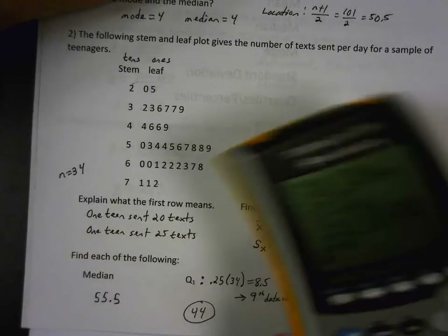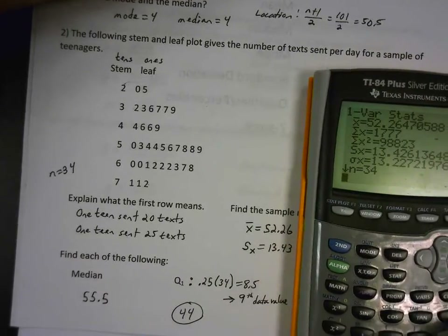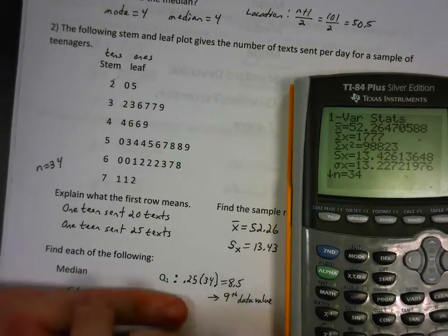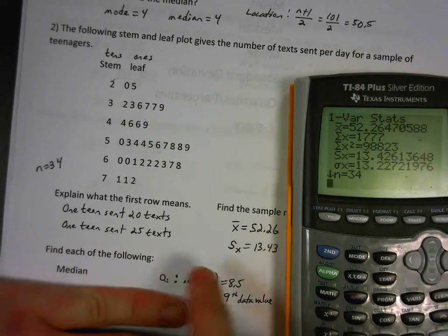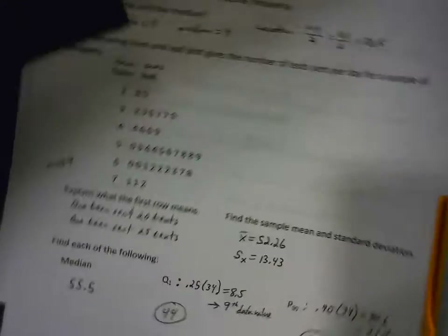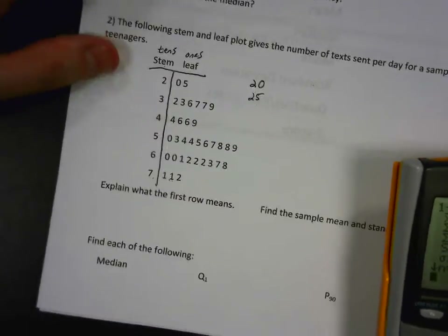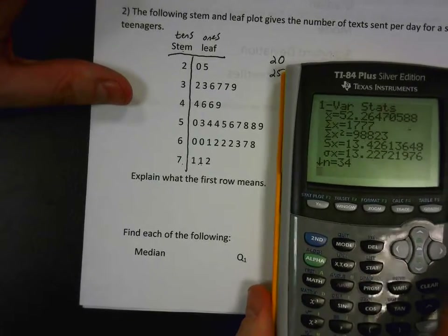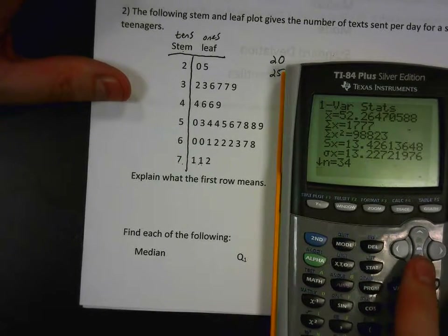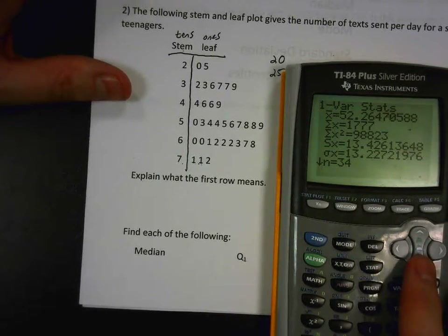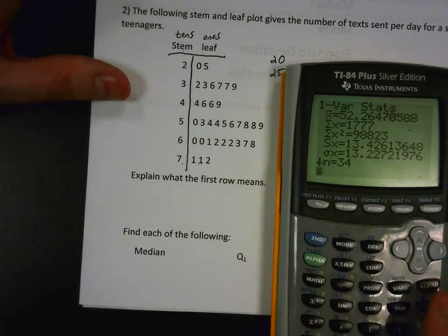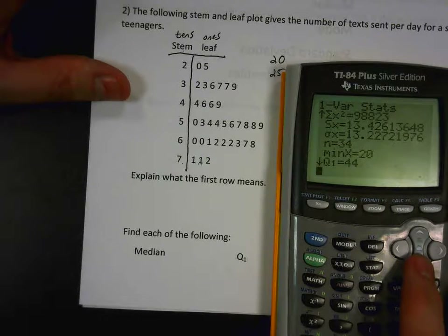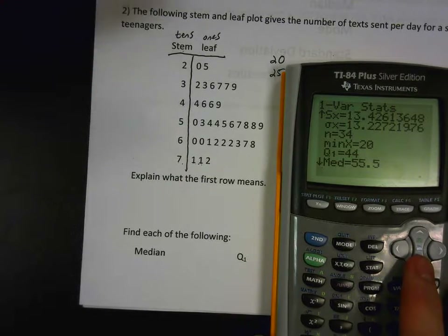Next we need to find the median, Q1, and Q3. The good news is the calculator already found these. If you scroll down in the one-var stats output, it shows the median is 55.5, Q1 is 44, and Q3 is 62.